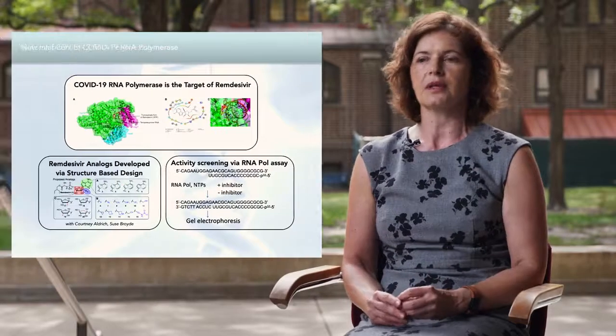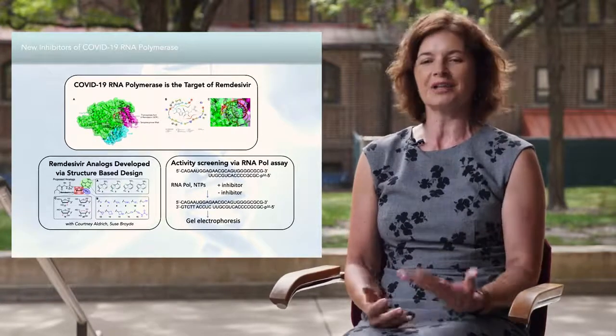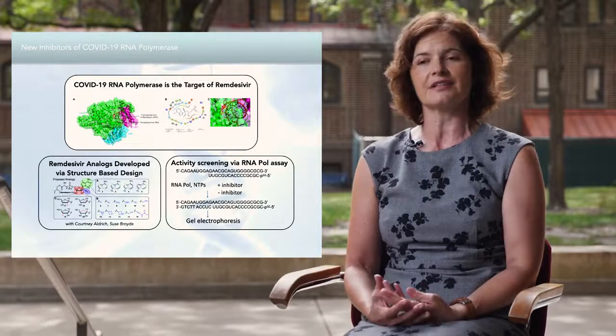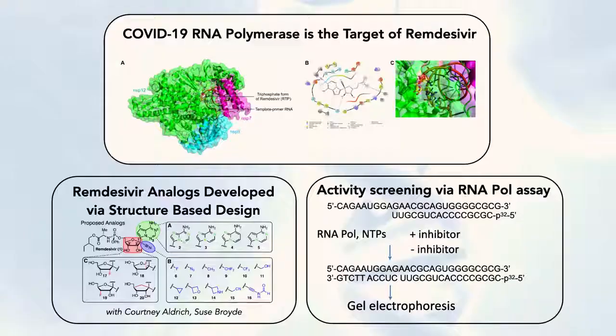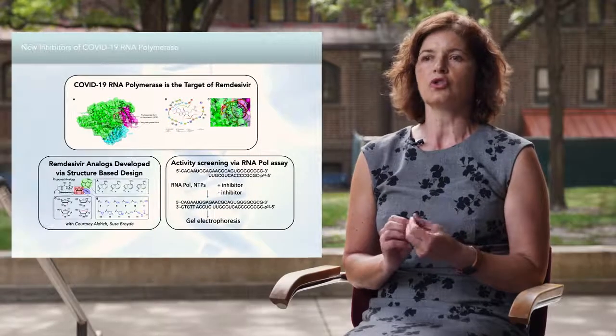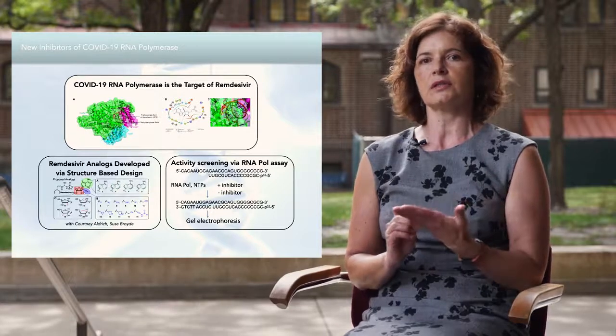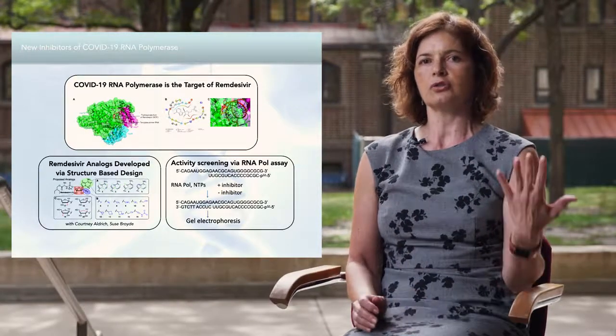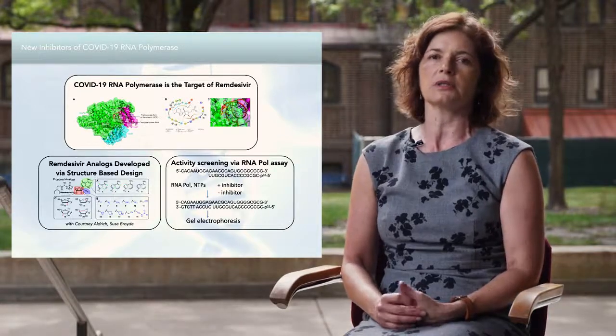Very recently, with the COVID pandemic influencing the world, we also became engaged in investigation of potential inhibitors of COVID RNA polymerases. Our lab is known for our ability to synthesize unnatural nucleosides, and so we are making analogs of remdesivir, which is one of the therapeutic agents currently being investigated for treatment of COVID. We are using the tools of molecular modeling, organic synthesis, and biochemical assays to test the activity of these analogs in human cells.